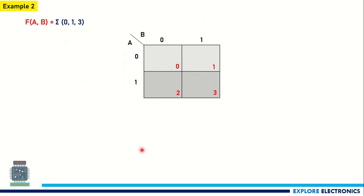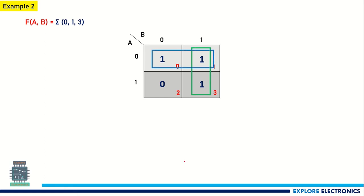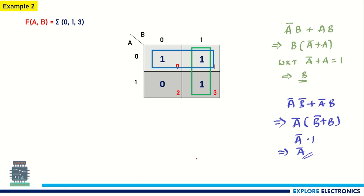Let us take one more example. F(A,B) = Σ(0,1,3). We write logic 1 in cells 0, 1, and 3, and 0 in cell 2. We group two cells at a time — we cannot group 3 terms. So we form one group of cells 1 and 3 shown in green, and another group of cells 0 and 1 shown in blue. The green cell gives result B and the blue cell gives result A̅.